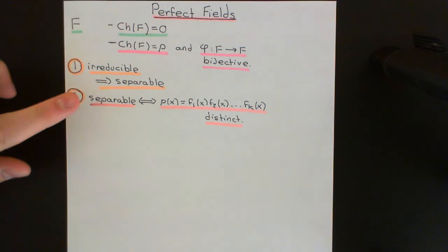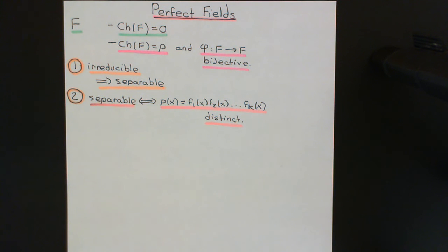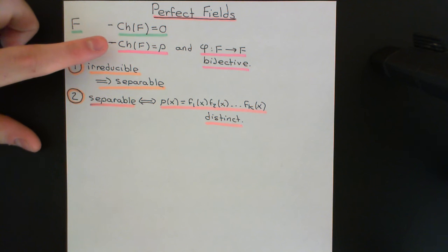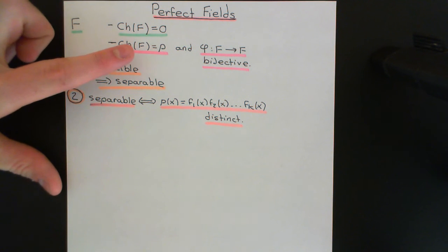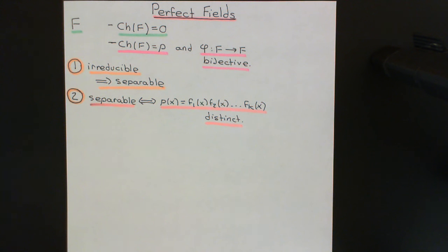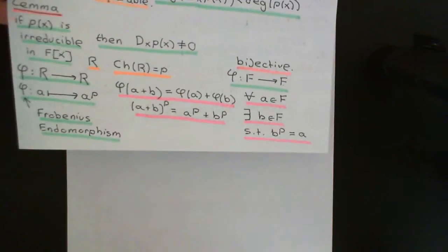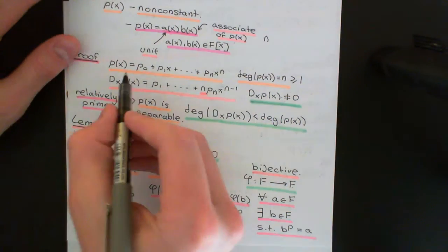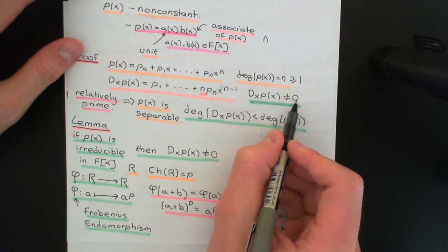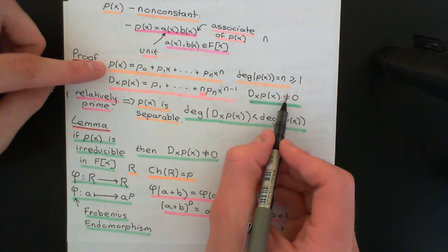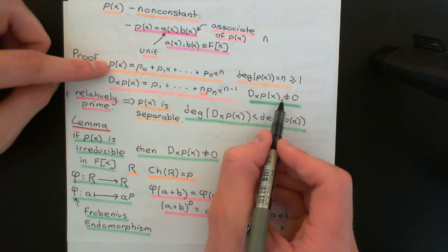Characteristic zero fields have a beautifully characterised set of separable polynomials. The same holds if you are a field of characteristic p with a bijective Frobenius endomorphism. In the previous video, we showed Theorem 1 and Theorem 2 hold in a finite field of characteristic p. However, you can slightly generalise and weaken the condition. The argument required to prove Theorem 1 was that the derivative of the irreducible polynomial was not equal to zero, and given that, we could conclude it was separable.